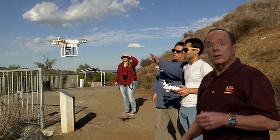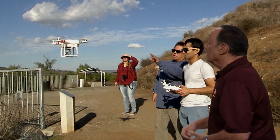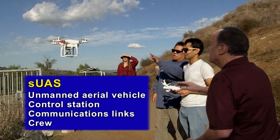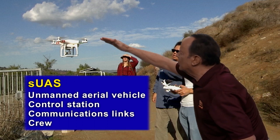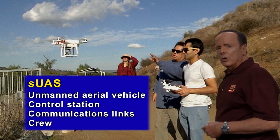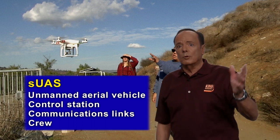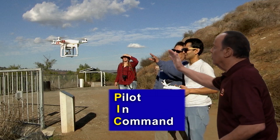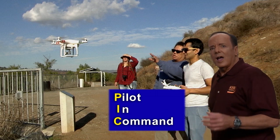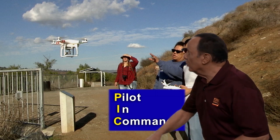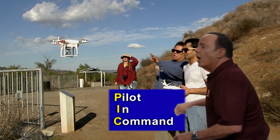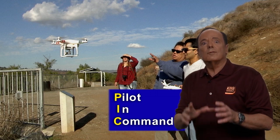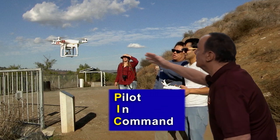The system can include the vehicle itself — the small unmanned aerial vehicle — as well as the control station, the communication links, and the crew. The crew can consist of just one crew member starting with you, the PIC or pilot in command, or it can have multiple crew members. Regardless of how many people there are in the crew, you, the PIC, are directly responsible for and the final authority over the operation of the flight and the safety of the flight, including everything involved in it.